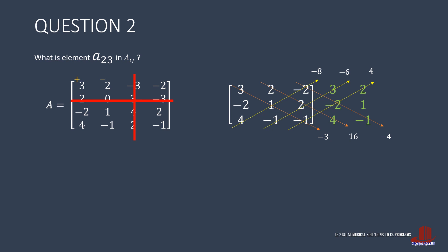Do not forget that there should be a negative 1 scalar before the matrix, which can also be written as alternating signs on each element. For element A[2,3], the scalar is negative 1. So take the difference of the positives and negatives as the negative of the whole bunch: negative 3 plus 16 minus 4, less the quantity of negative 8 minus 6 plus 4, simplified as negative 19.